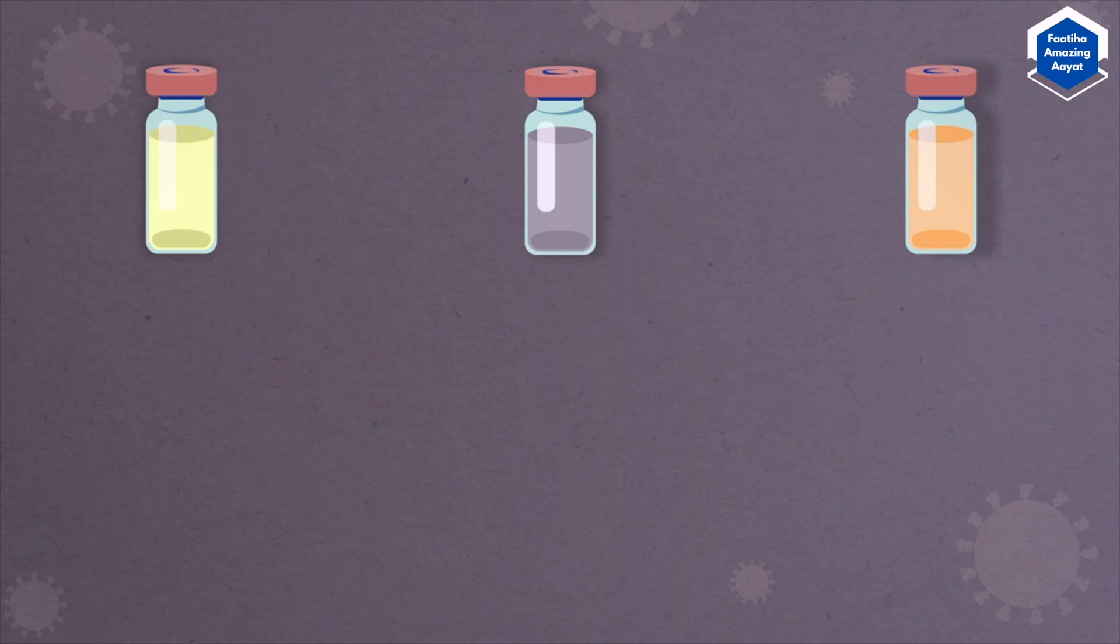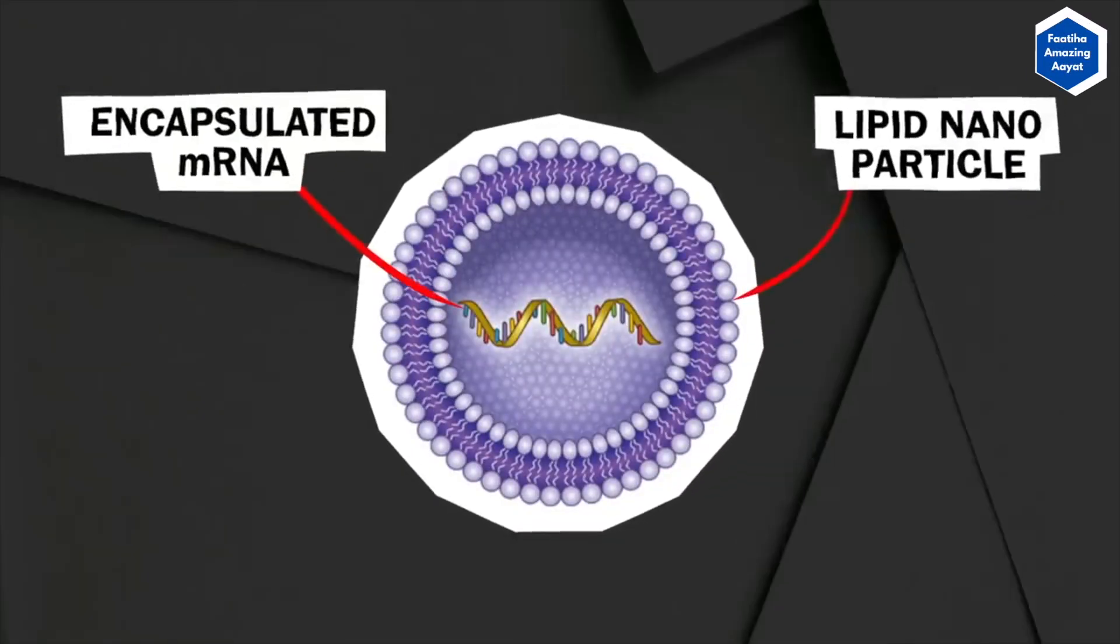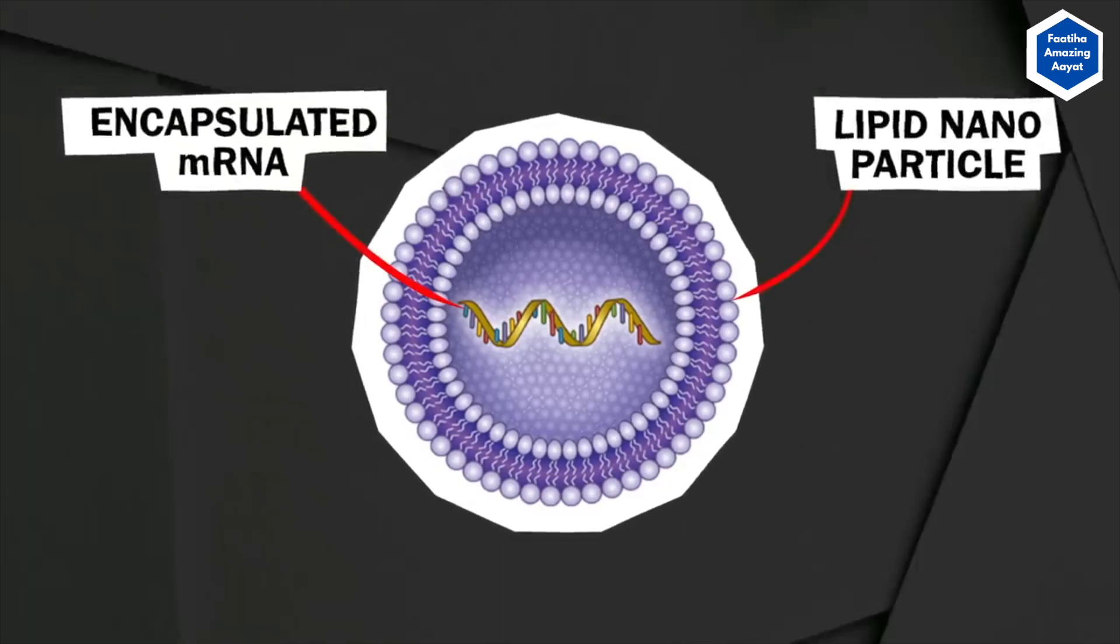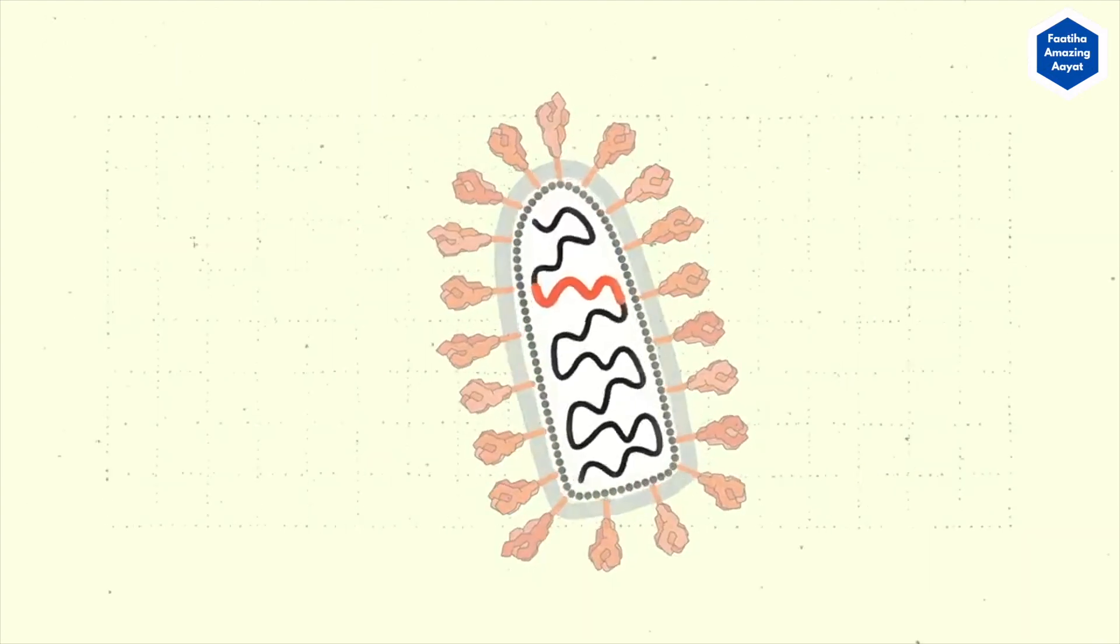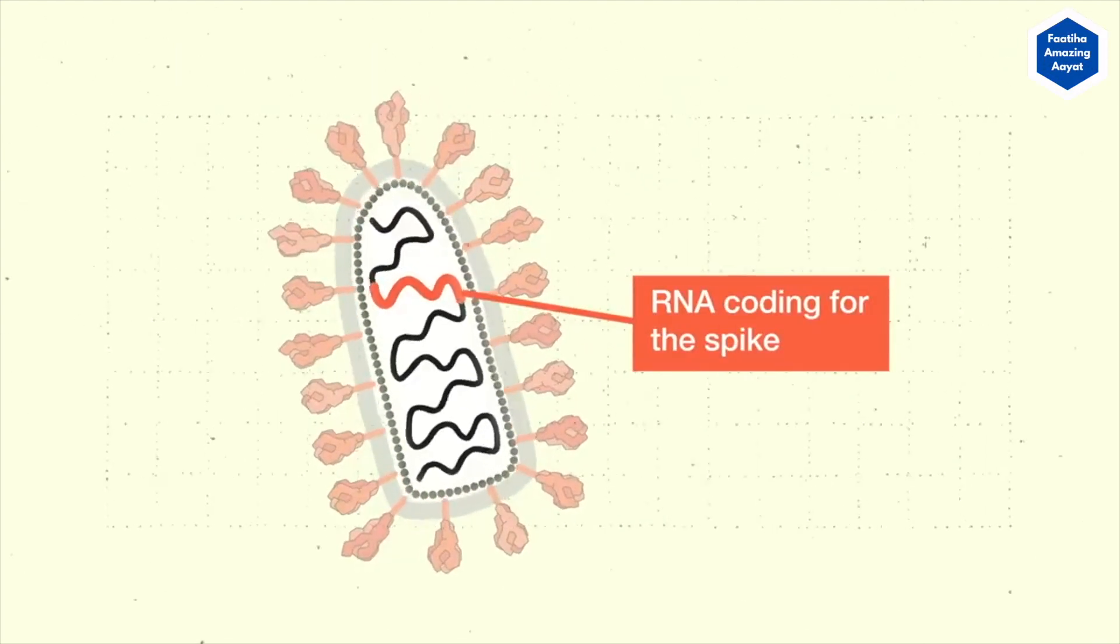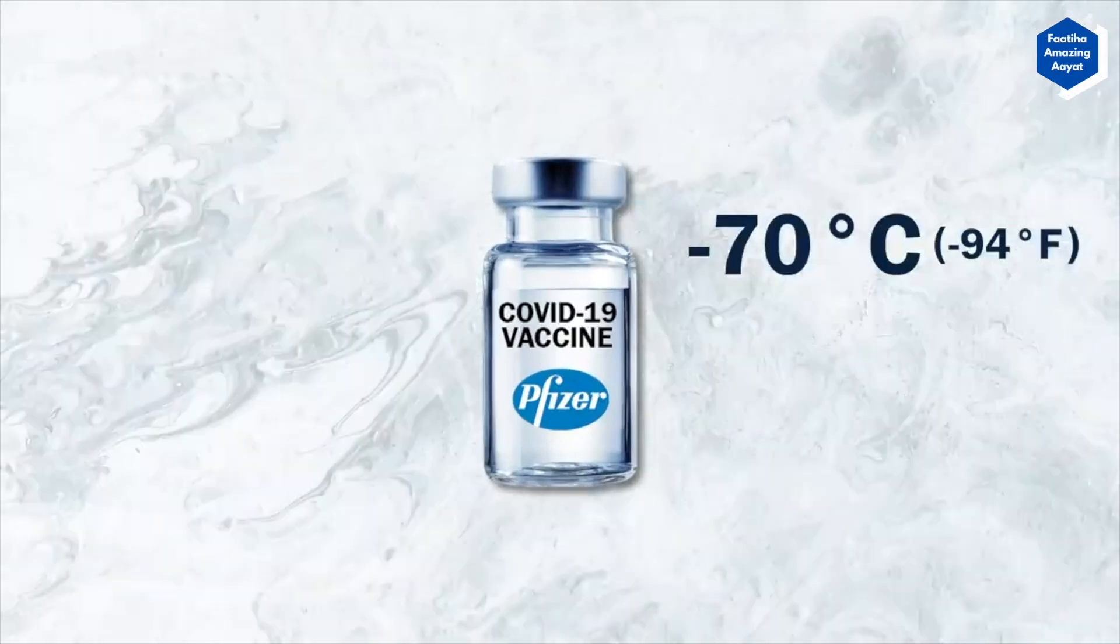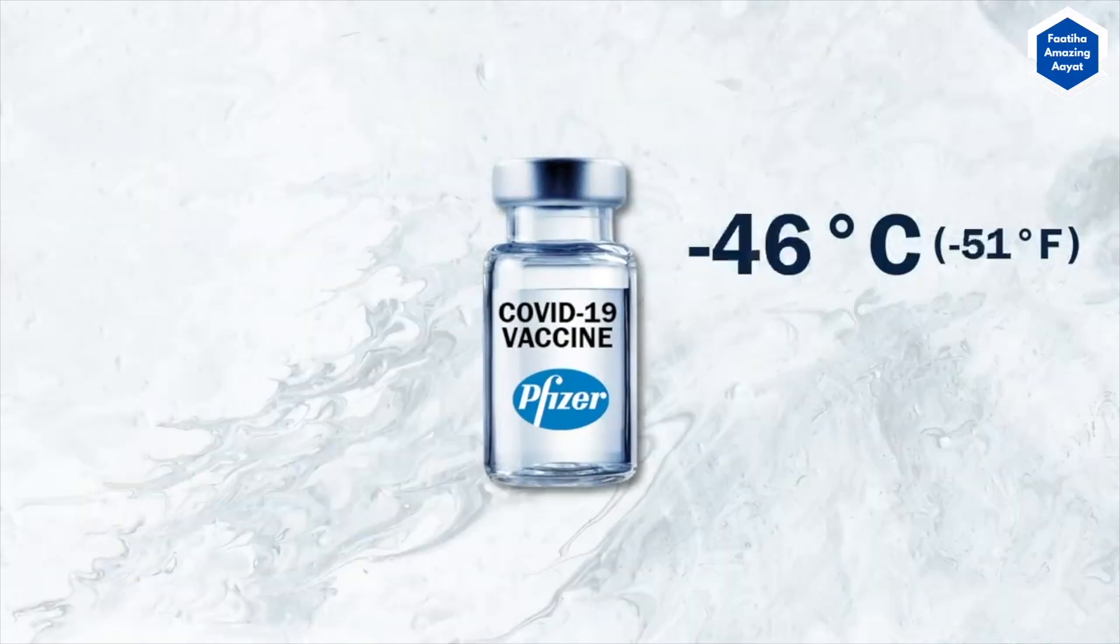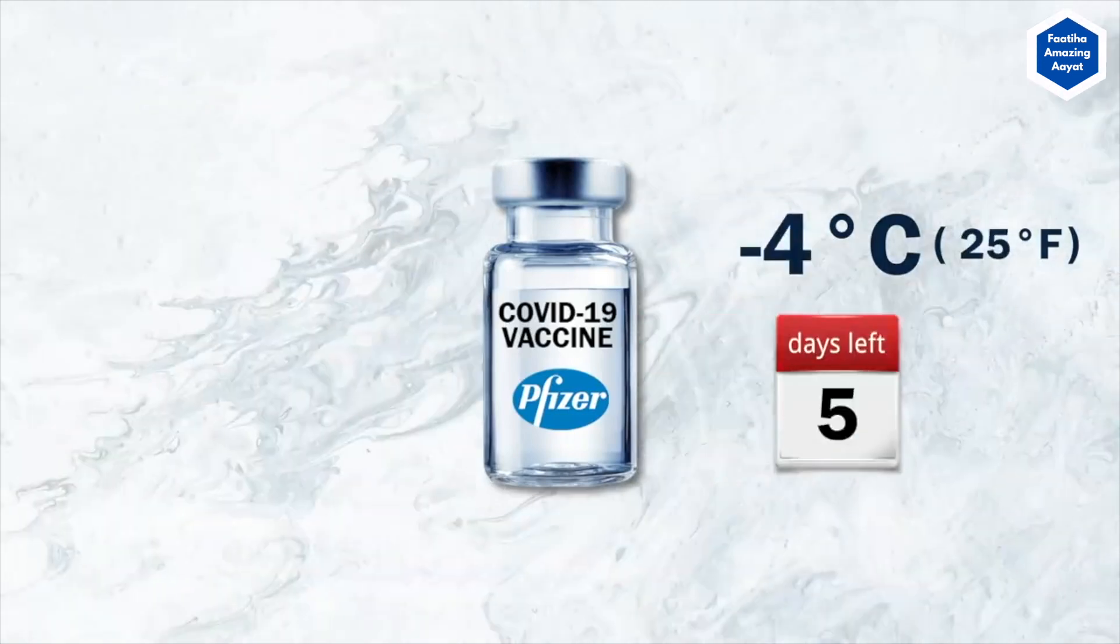The vaccines that are being released now have the mRNA encapsulated in lipid nanoparticles, which essentially protect the mRNA from being degraded. That is why Pfizer vaccine has to be kept at minus 70 degrees Celsius, while in a normal refrigerated temperature of minus 4 degrees Celsius, it can only last 5 days.